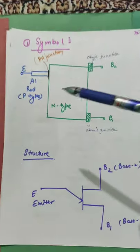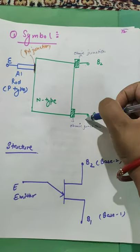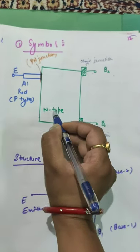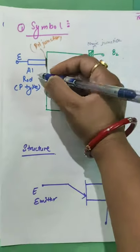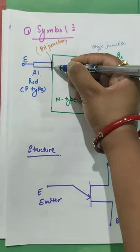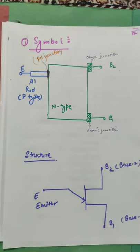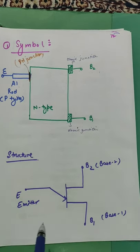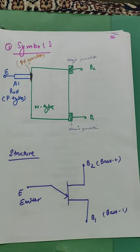Here is the symbol. Basically, this has an N-type substrate and two ohmic regions — Base 2 and Base 1. It has a single junction. The P-type region is basically made by an aluminium rod. This aluminium rod forms a junction — this is called a PN junction — and this is the emitter. So, the P-type aluminium rod creates one junction, which is why it is called a Unijunction Transistor. This is the emitter, this is the base — that is the symbol of UJT with Base 1 and Base 2.